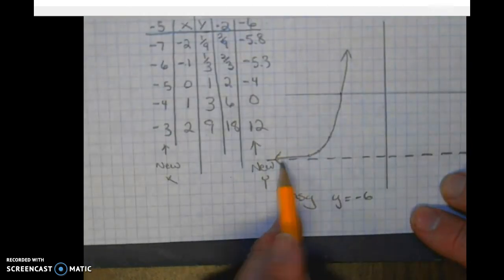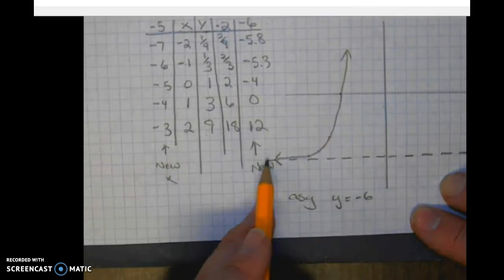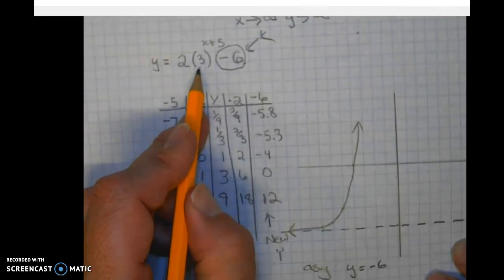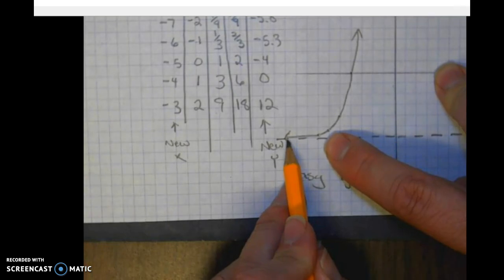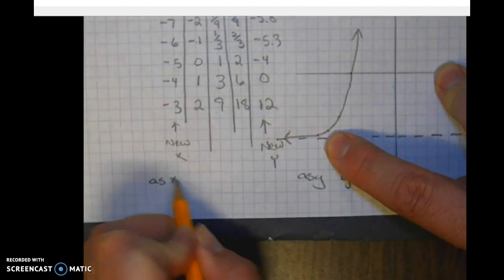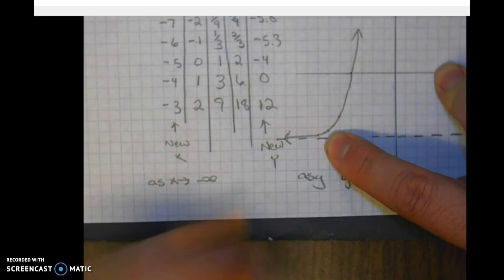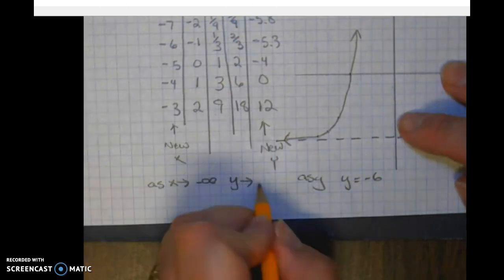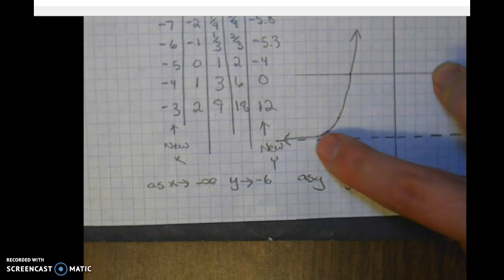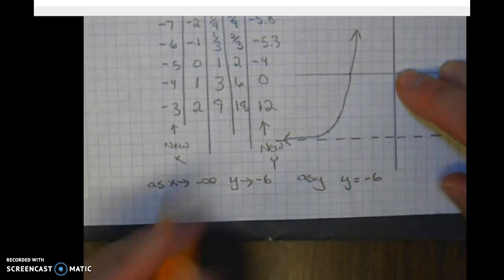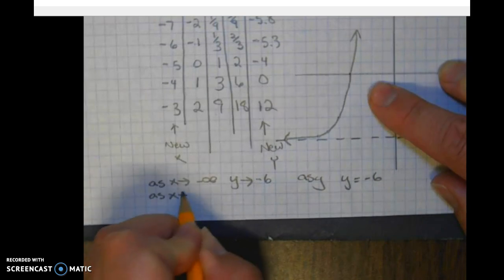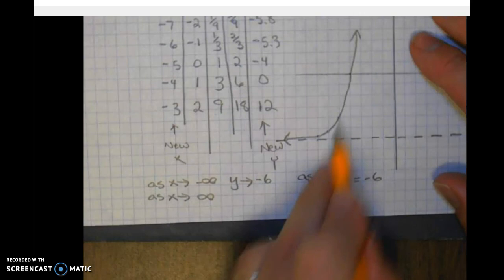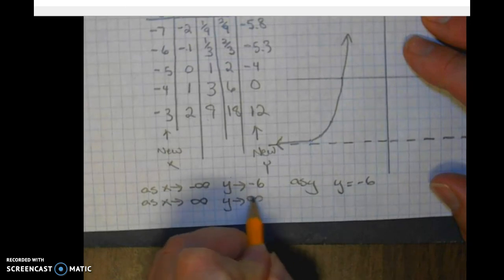And what else? It's increasing. Obviously, the base is greater than one. End behavior. So let's take a look. As we go to the left, so as x approaches negative infinity, y is approaching, well, it's getting closer and closer to this asymptote. So it's approaching negative six. It's not going to cross this line. As x approaches positive infinity, that means we're going to the right. If we look to the right, it's going up infinitely.